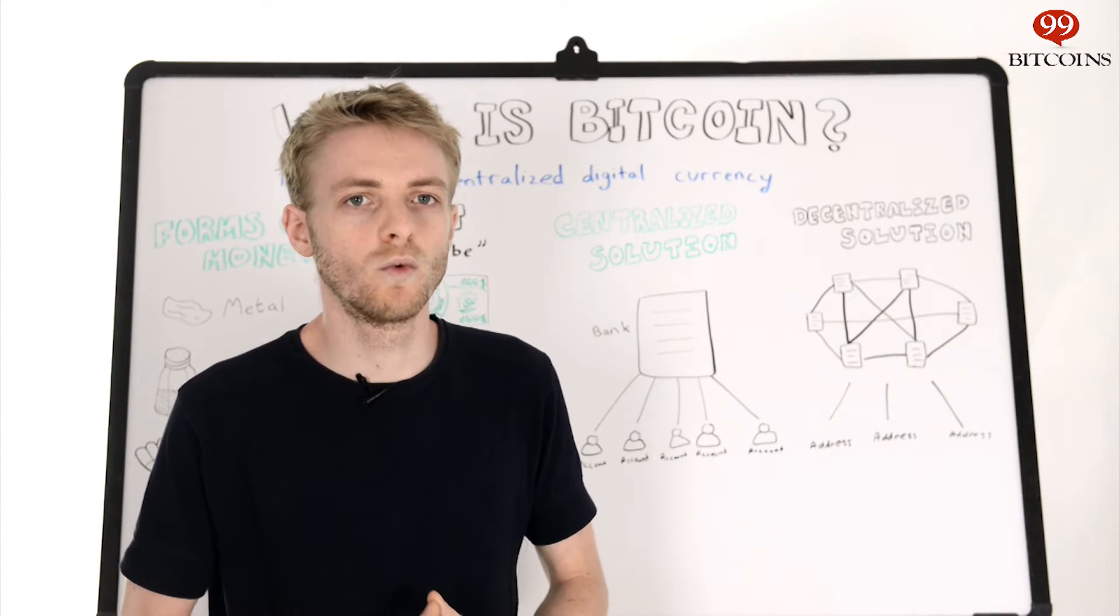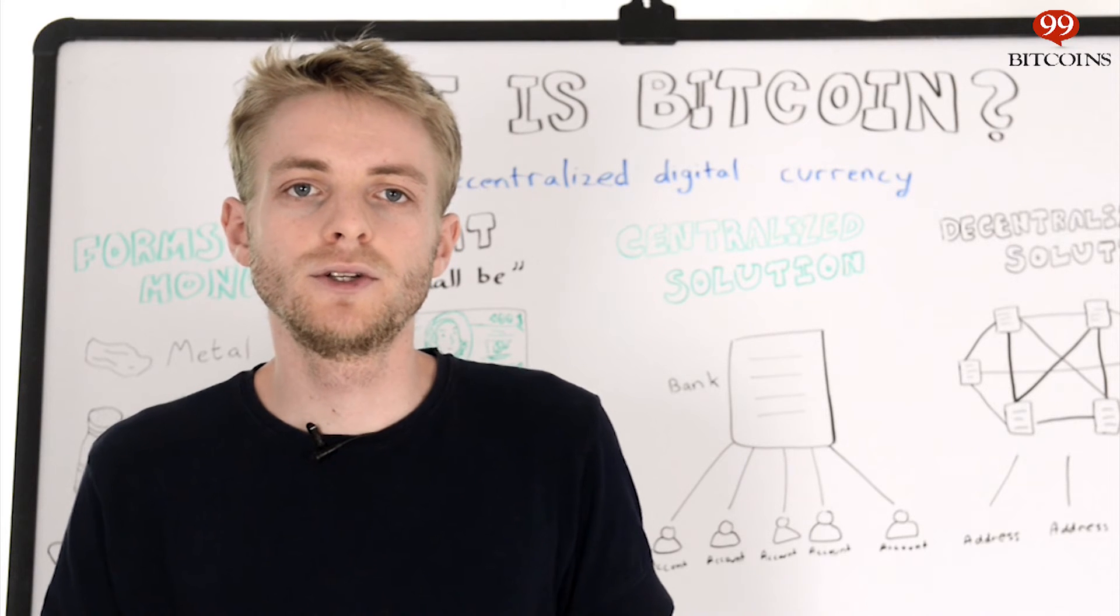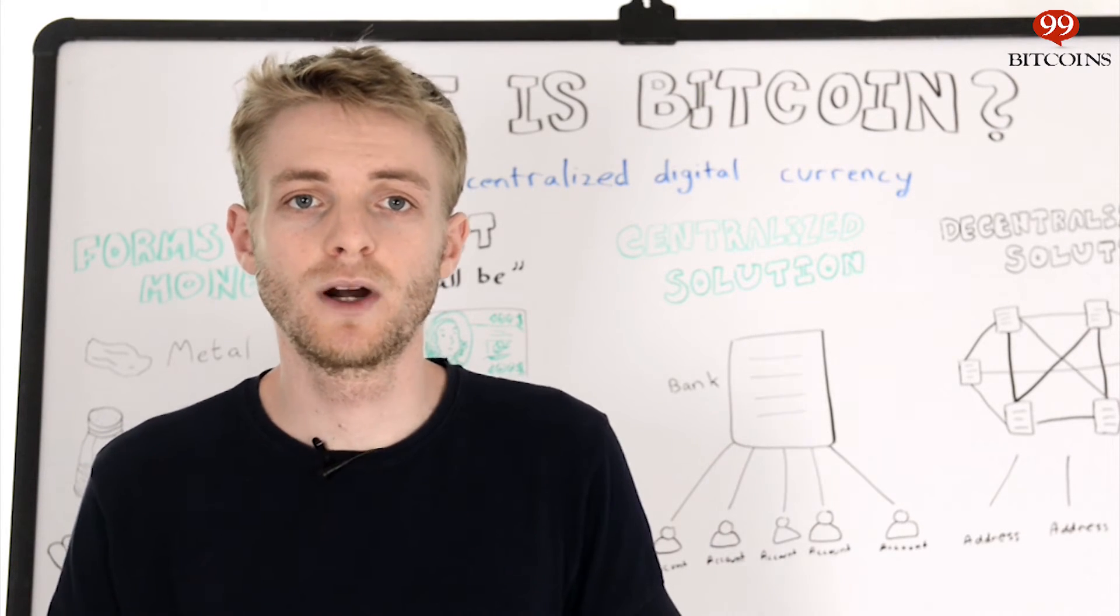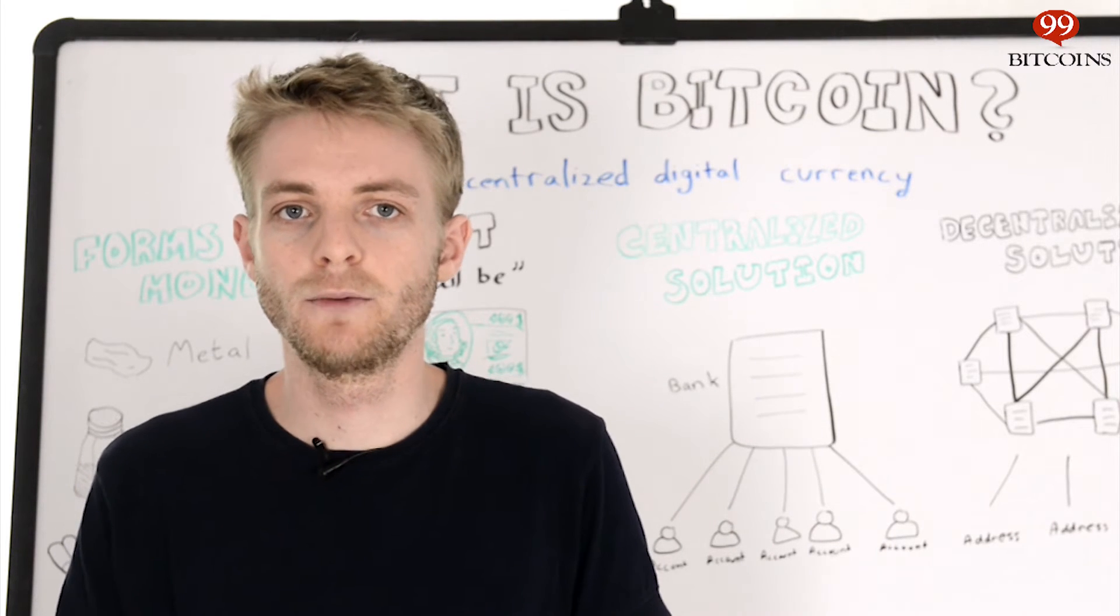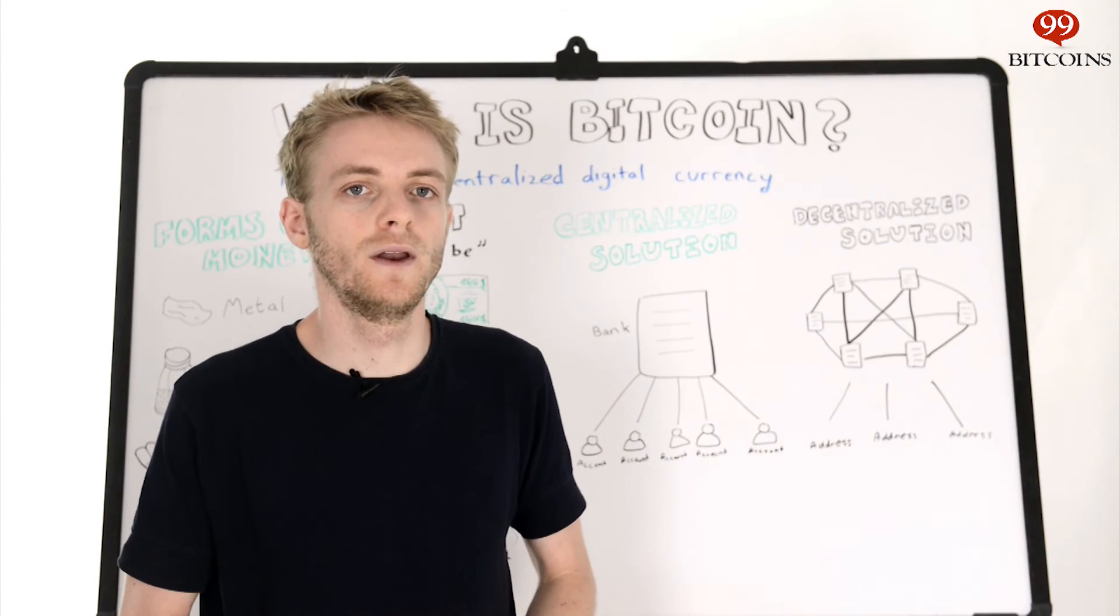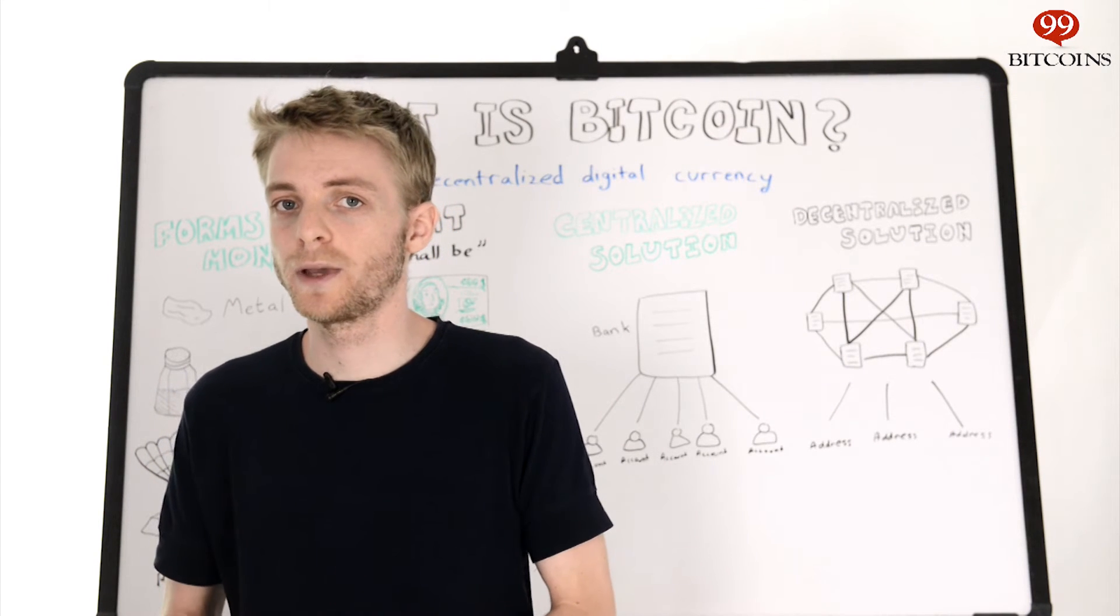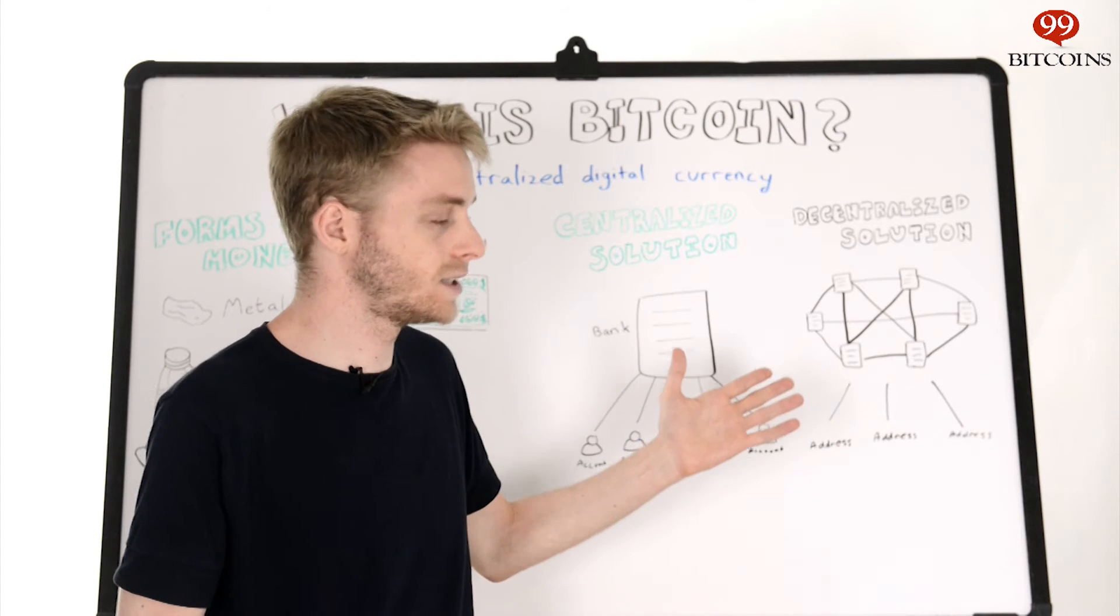Computer scientists though weren't pleased. Decades later in 2008, an anonymous researcher publishes a paper describing how to solve this problem without a centralized solution—that is, without a bank. He called it Bitcoin and went on to describe how you can make a ledger that doesn't rely on a single particular bank. This is a decentralized solution.